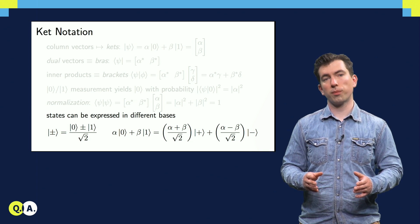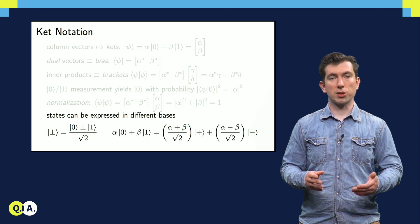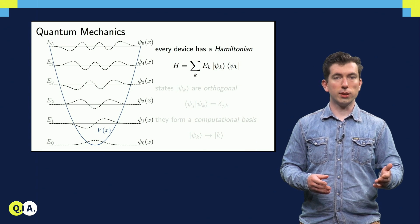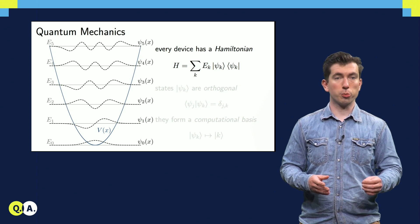This leaves us with a small question. If any basis is just as good as any other, is there a basis that we should use as the default? Fortunately, the devices that we use to store and manipulate qubit states provide us with just such a default basis.